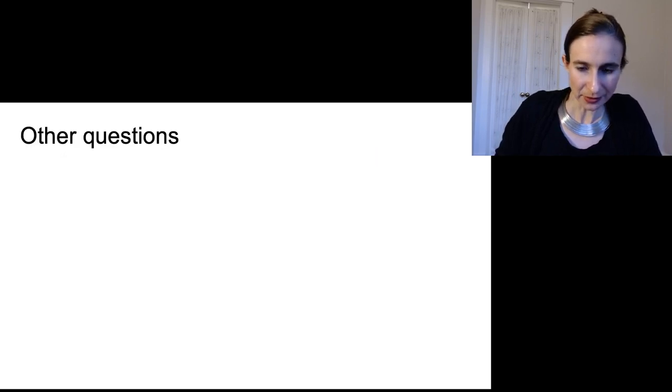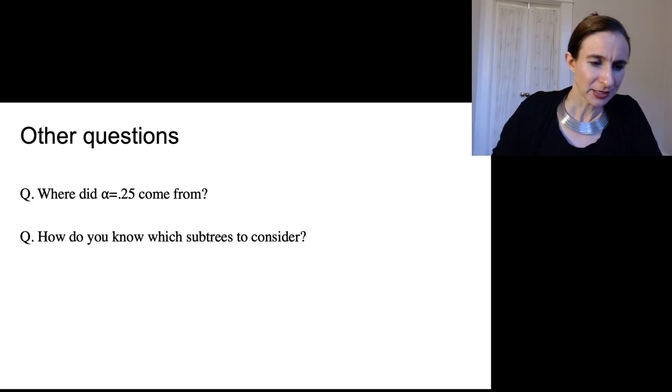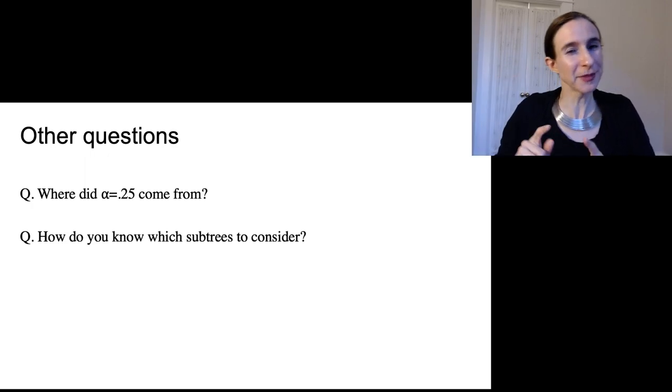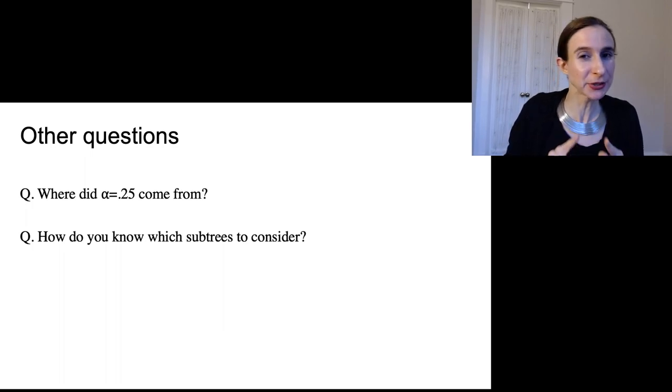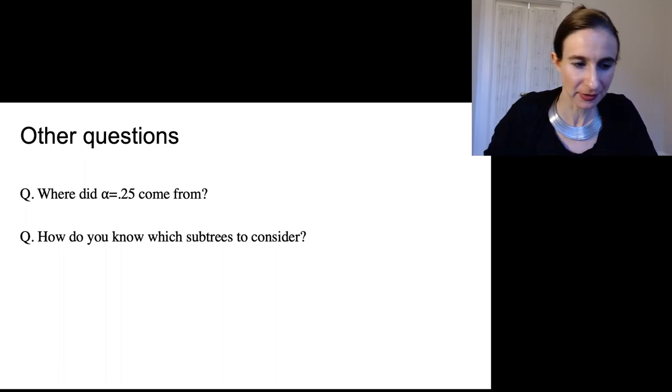So other questions you might have on decision trees. Where did that 0.25 come from? Like I said, pile of heuristics. Okay, so how do you know which—oh, I should mention though, it's a pile of heuristics, but it's been tuned over many years and it really does work. It's actually shockingly good considering what it is.